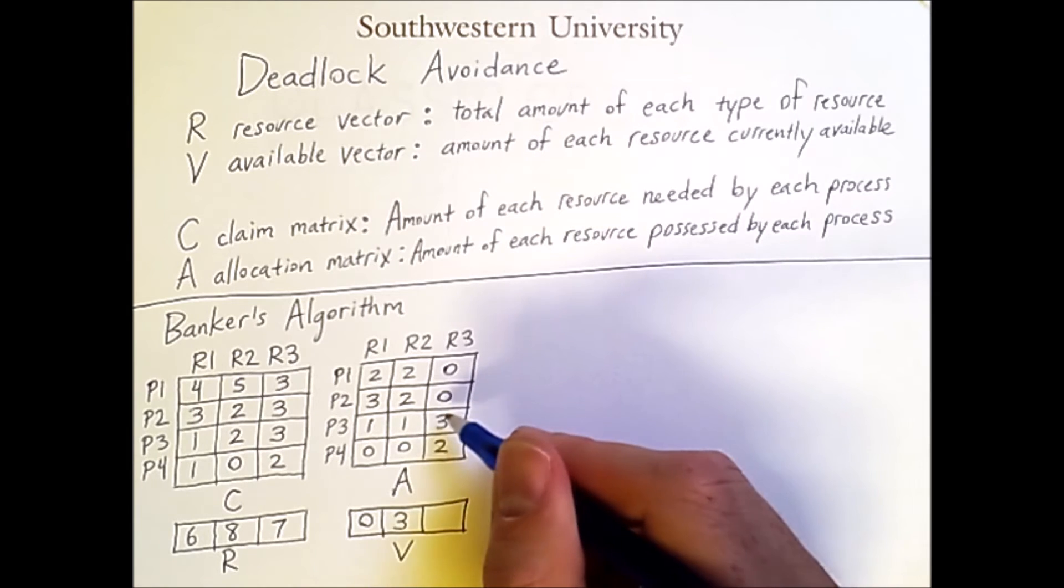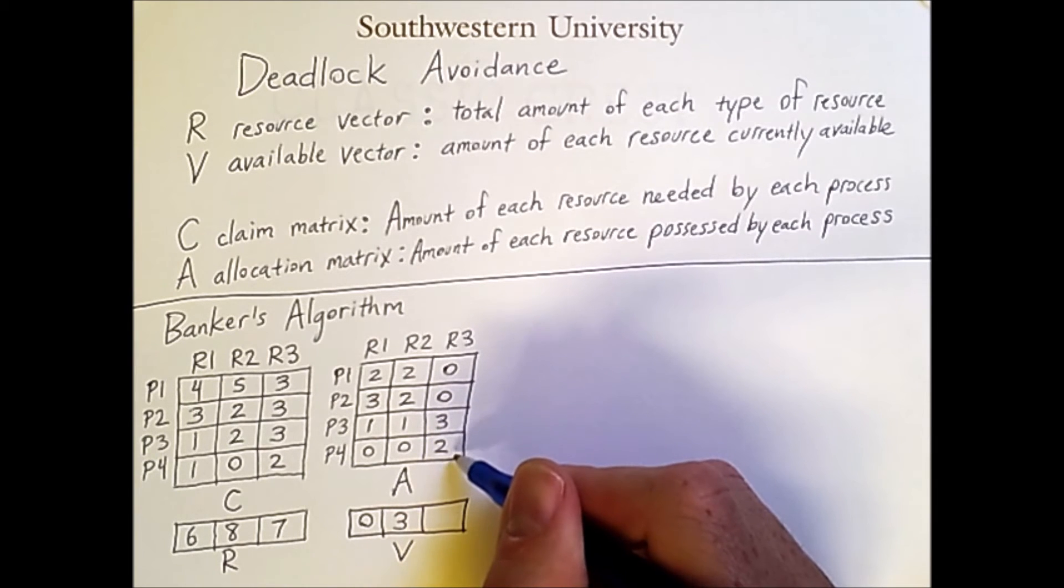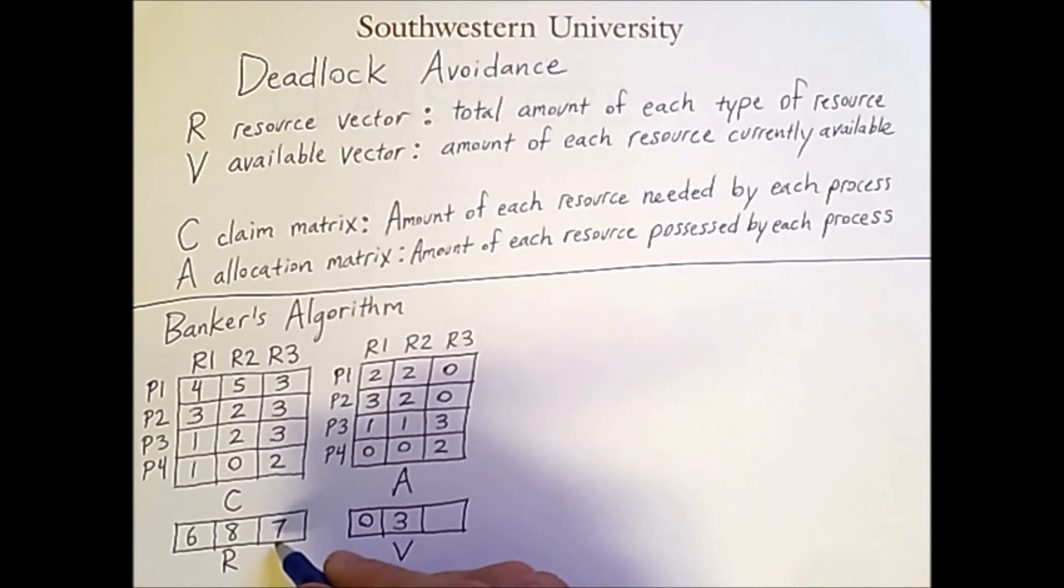For 3, we have 1, 2, 3, 4, 5 units that are allocated out of 7. 7 minus 5 is 2. And so now we have our available vector. There are 0 units of resource type 1 available, 3 of type 2, and 2 of type 3.